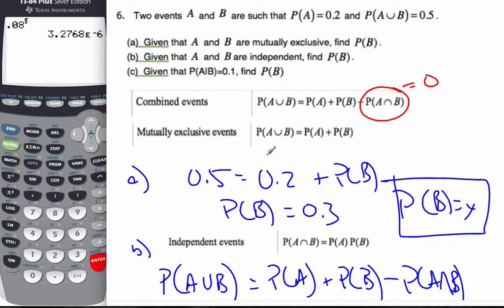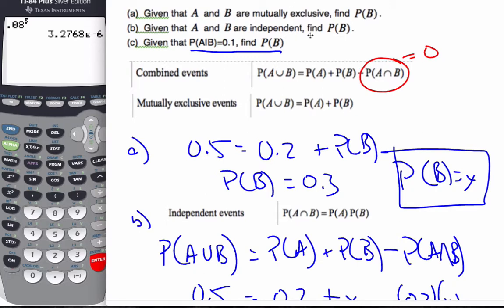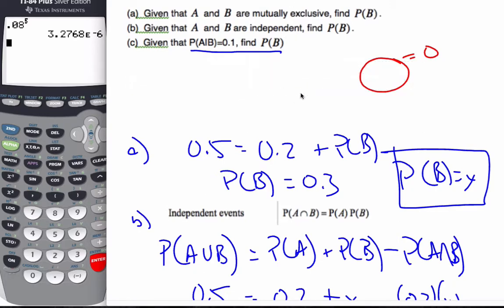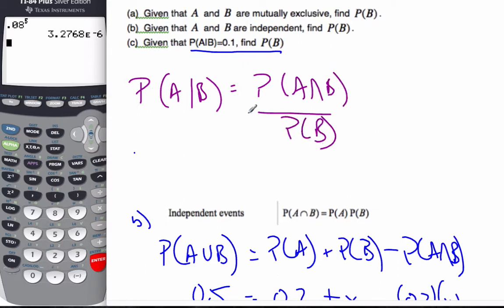And now finally, given that this is true, using conditional probability, I know if I get rid of this, make some space for myself. If I use my conditional probability ideas, I know that P(A given B) is equal to the probability of A and B over the probability of B. Well, from that I know this is 0.1. A and B I just found out.